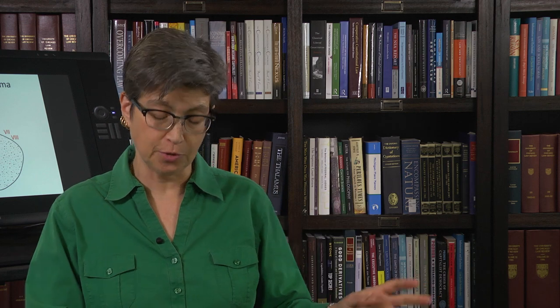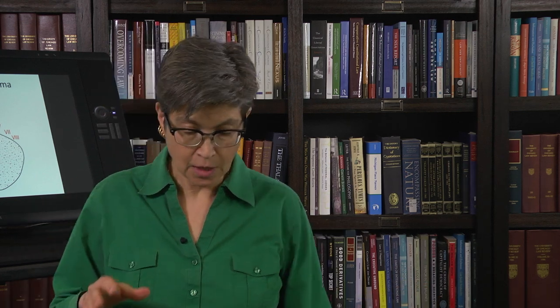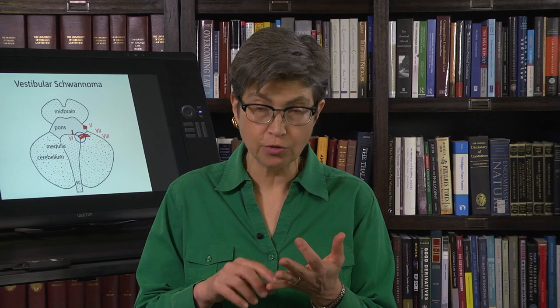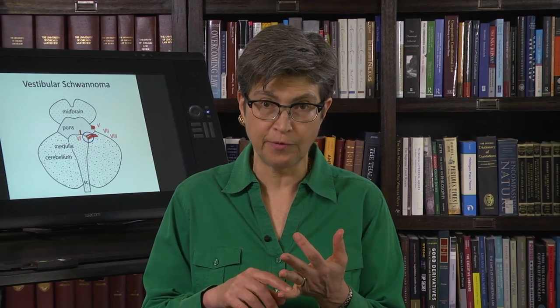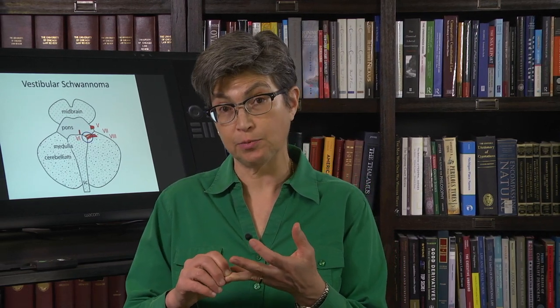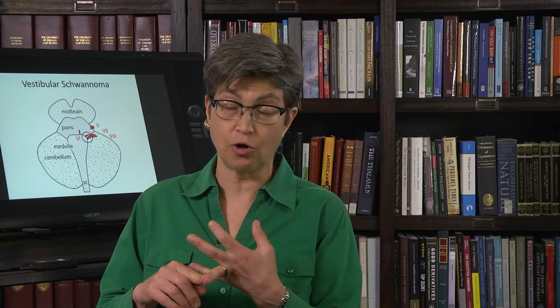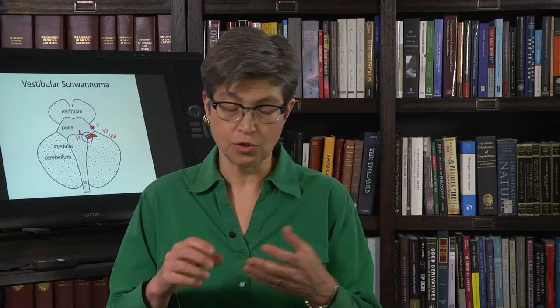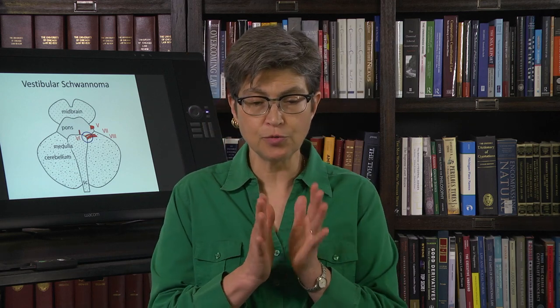The vestibulocochlear nerve serves both the cochlea and the vestibular system. If the cochlear innervation coming from the spiral ganglion is interrupted in any way, there are two possible outcomes: deafness or hard of hearing, and tinnitus — a negative sign and a positive sign, and those are pretty straightforward.